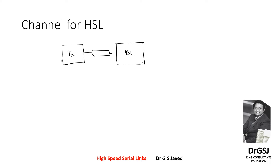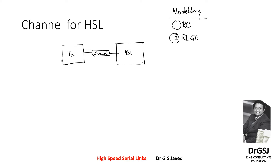This channel has got many methods of modeling itself. The common ways are: first, using an RC equivalent where only the resistance and capacitance behavior is captured. Second is the more prominent RLGC, where resistance, inductance, capacitance, and admittance behavior is taken care of. RC is typically used for low frequency operations and RLGC is used for high frequency operations.